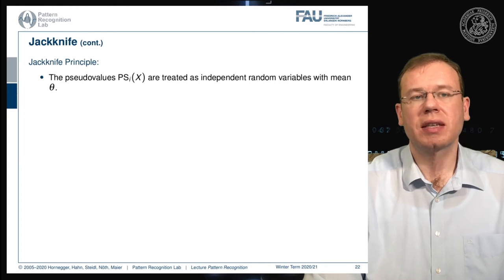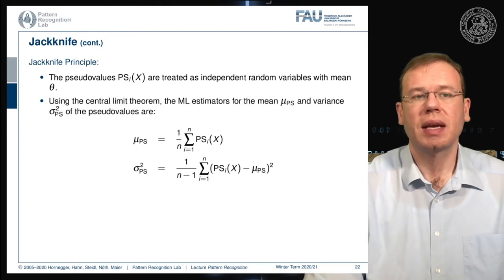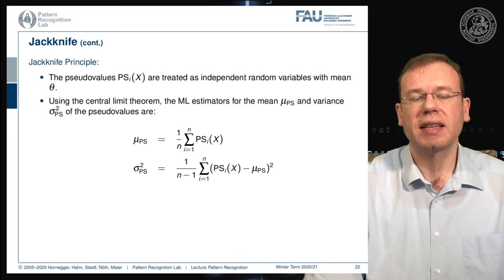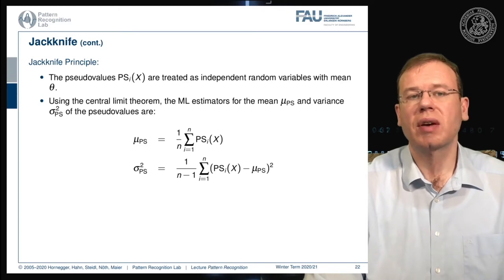The jackknife principle is essentially that the pseudo values are treated as independent random variables with mean theta. Using the central limit theorem, the maximum likelihood estimators for the mean and variance of the pseudo values can be determined as the mean over all pseudo values, and the variance is determined as one over N minus one times the sum over the differences of the pseudo values with the respective mean.